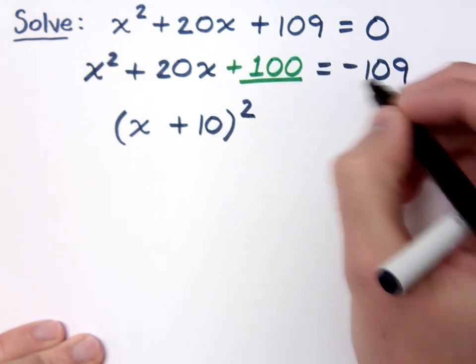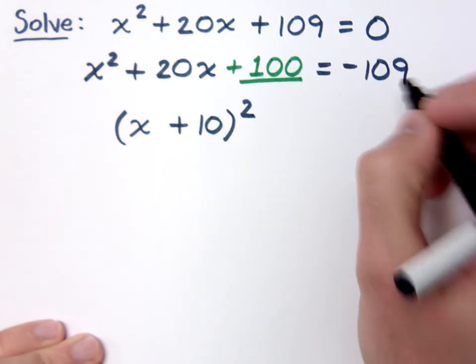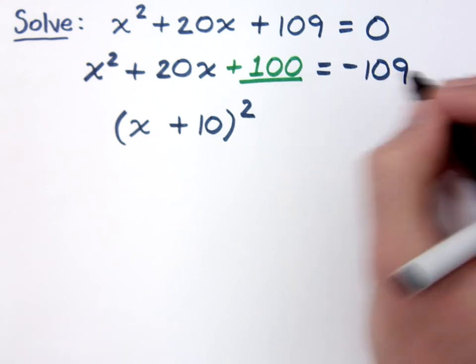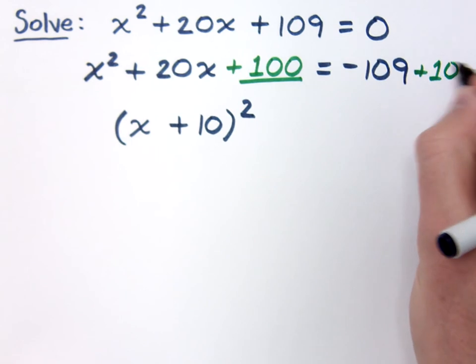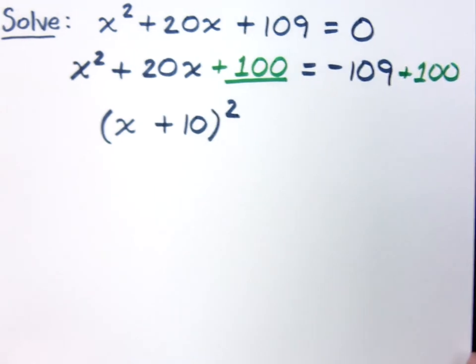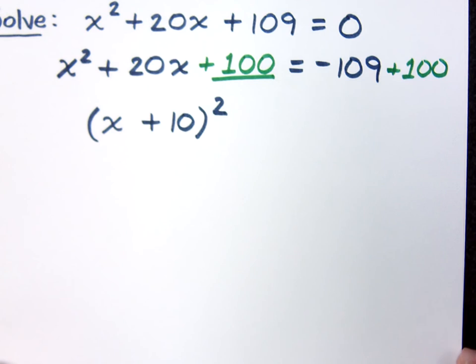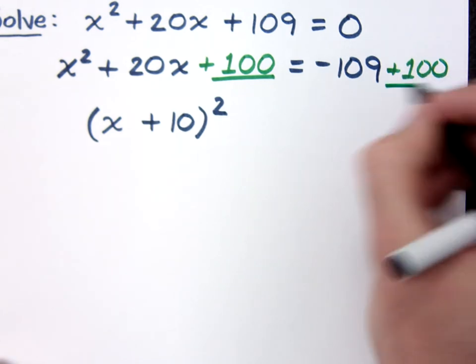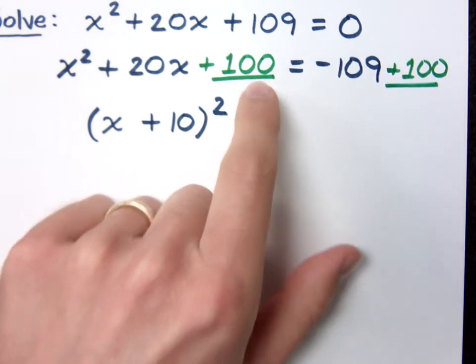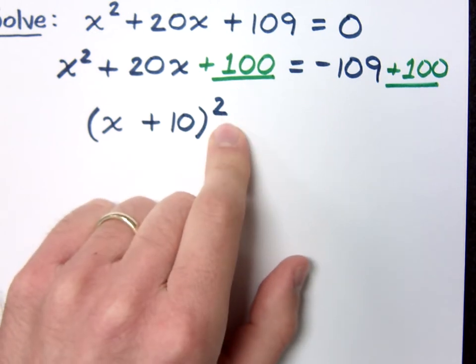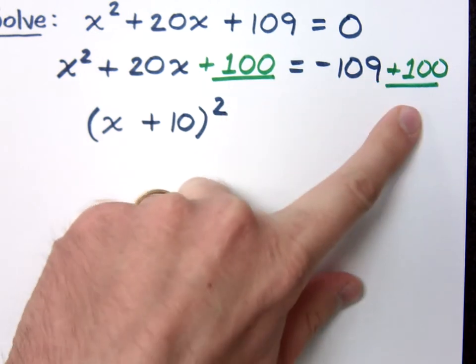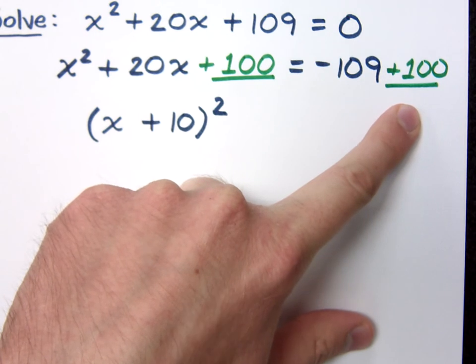Now can I just put a plus 100 on the left side? What you do to one side you have to do to the other side. Now remember I put the 100 here so that I can get a perfect square binomial. And I put the 100 here because what I do to one side I do to the other side.